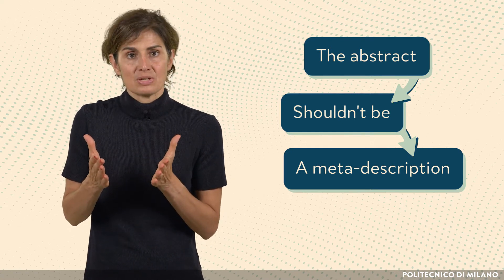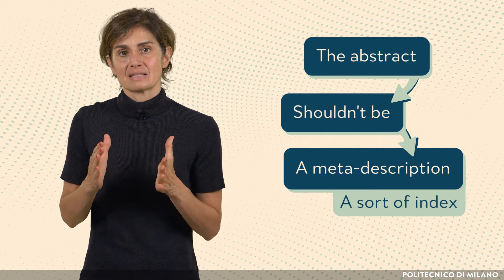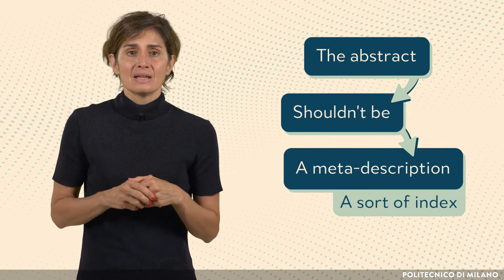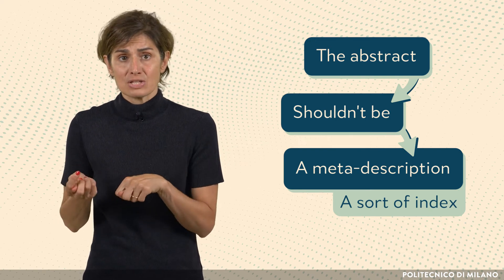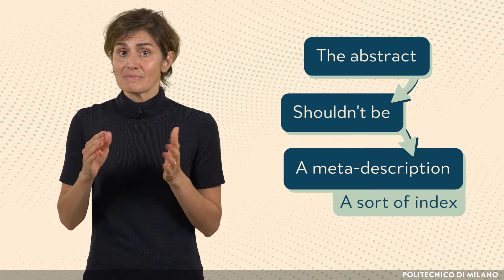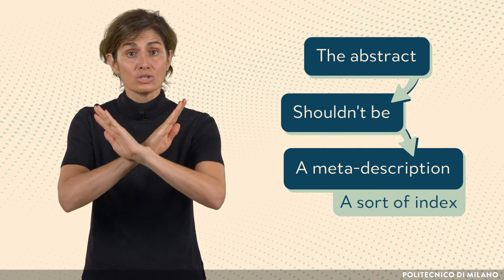What do I mean by meta-description? I mean a sort of index, something like: Then the method is explained and later on the conclusions and the important application of the research are discussed. This is how the abstract should not be.